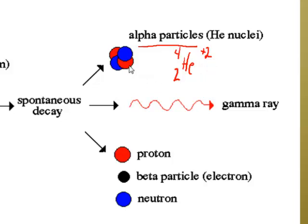So these guys — if we had them in a cathode ray tube, what do you think they'd do? They'd attract anything negative. Opposites attract, right? So if I brought the negative end of a magnet in, it should attract. Which is the exact opposite of what the electron does. Opposites attract, like repels like.